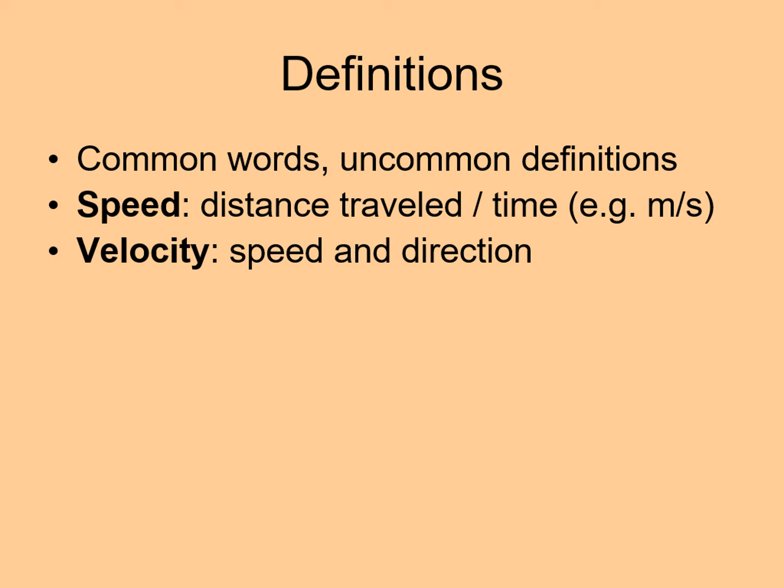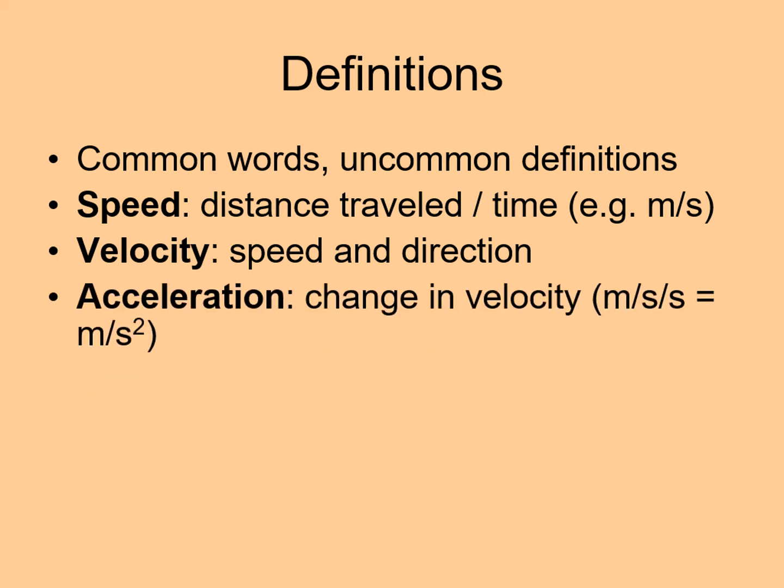This distinction really starts to matter with the next term, acceleration. Acceleration is the change in velocity. Since the units of velocity are distance over time, the units of acceleration are distance over time divided by time, or distance divided by time squared. An example would be meters per second per second or meters per second squared. Any change in velocity is an acceleration. If you speed up, you're accelerating. If you slow down, you're accelerating. And even if you just turn a corner without changing your speed at all, you're still accelerating.